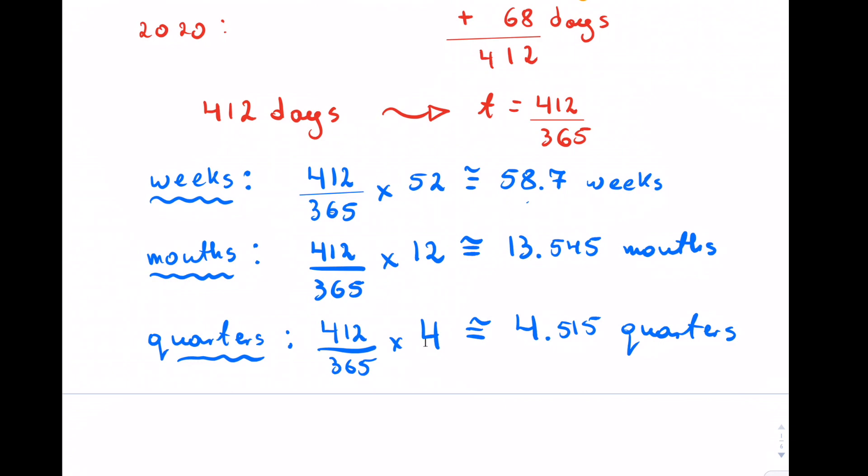The concept is take the number of years that you have, which we found as t, and then just multiply it by whatever it is that you want to find—weeks, months, quarters. We could have found semi-annuals by multiplying by two and so on. That's it for this question.